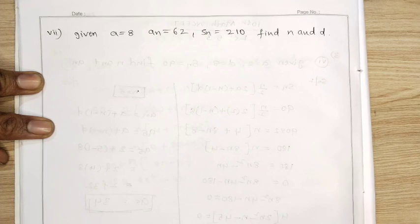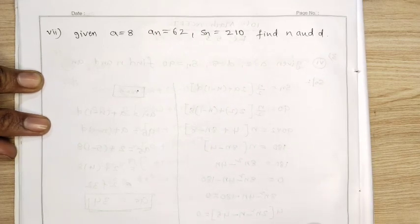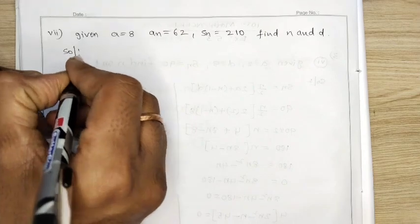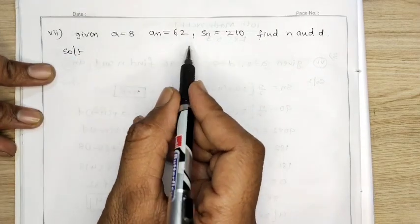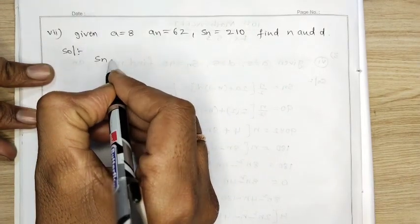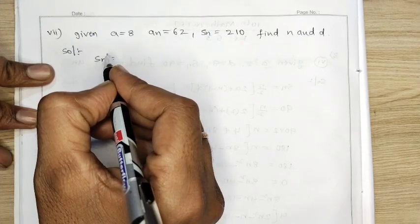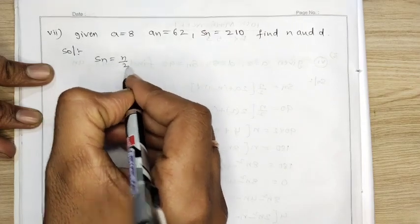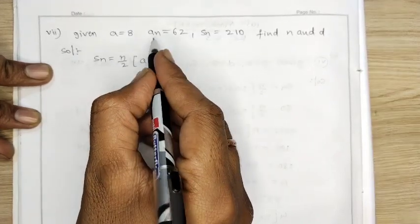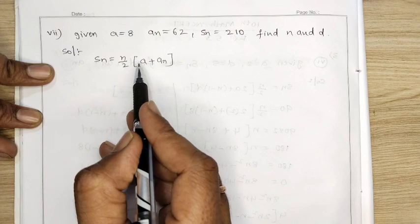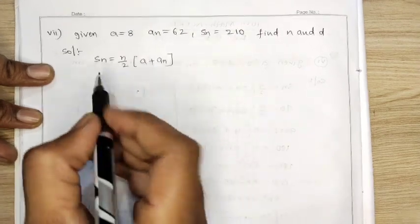7th question from the same exercise. Given a equal 8, an equal 62, Sn equal 210 — find n and d. Solution: when Sn is given along with an, we use the formula Sn equal n by 2 into a plus an, which is the last term.